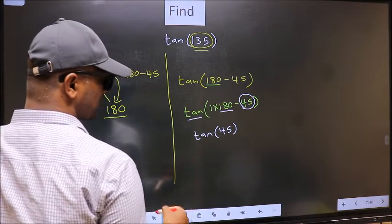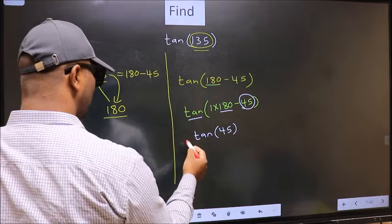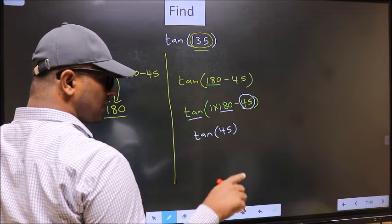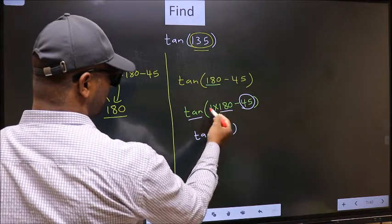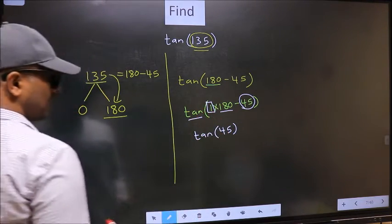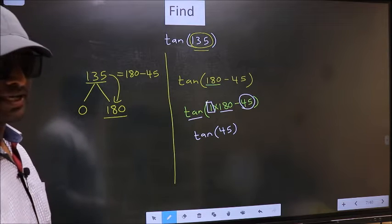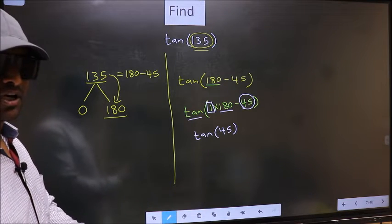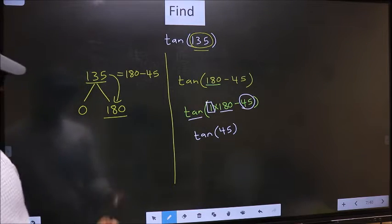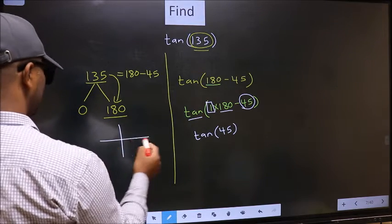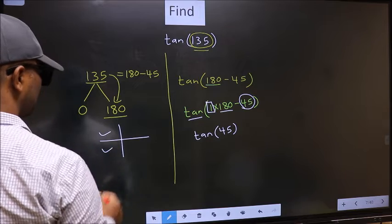Now the question is, will we get here plus or minus? To answer that, we should look at the number before 180. That is 1, and 1 is odd. And all the odd multiples of 180 lie either in the second or in the third quadrant.